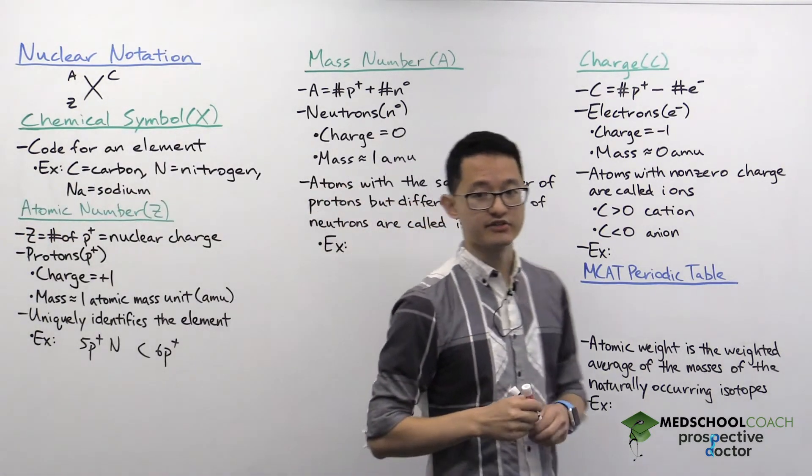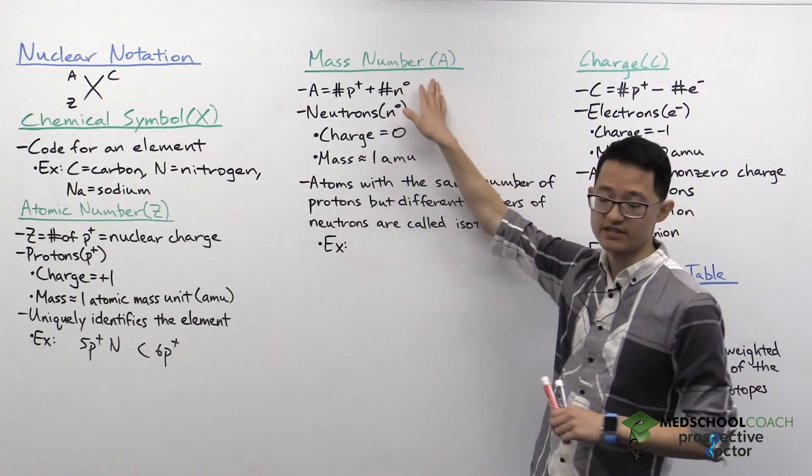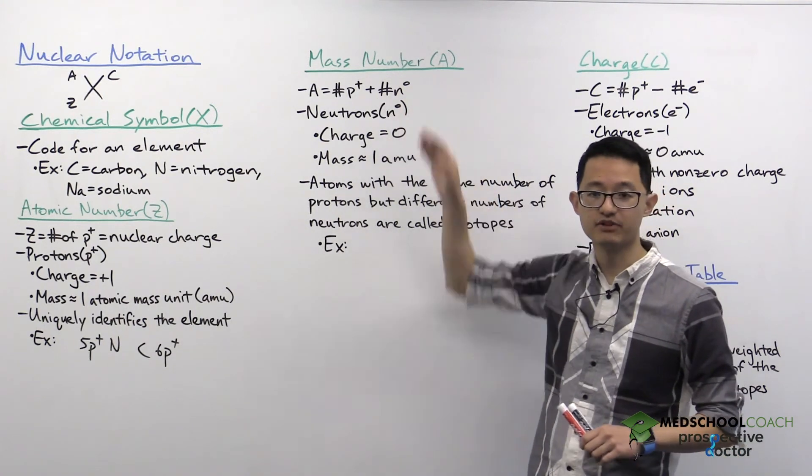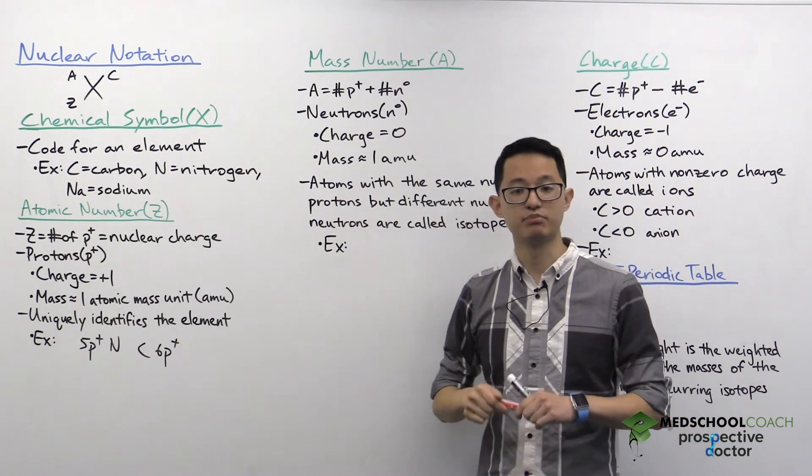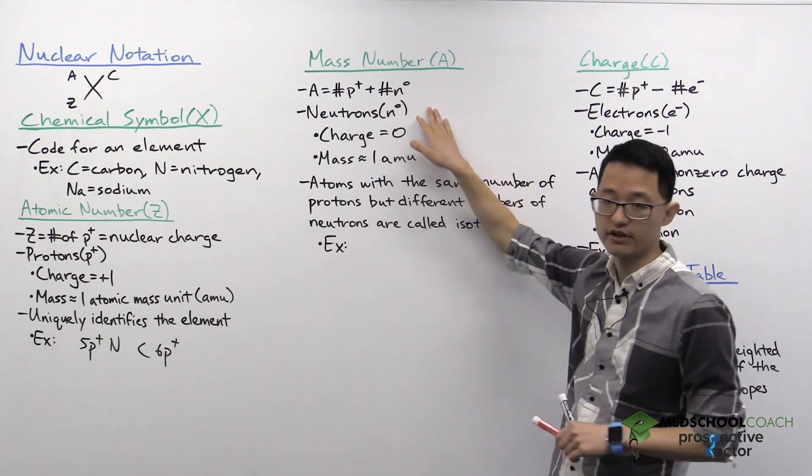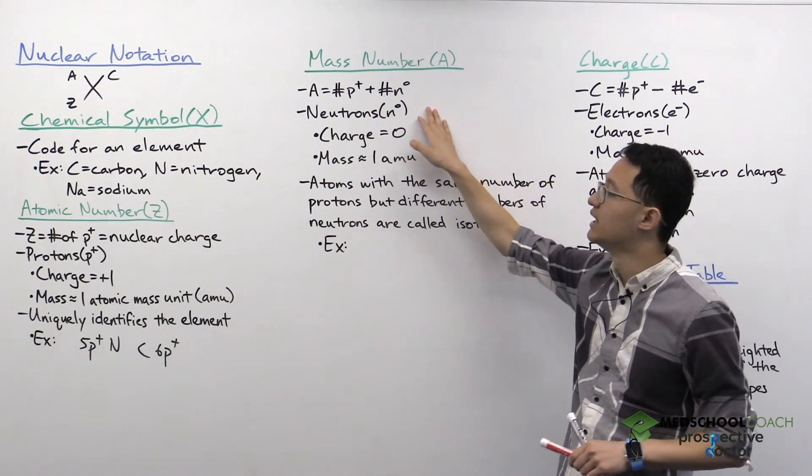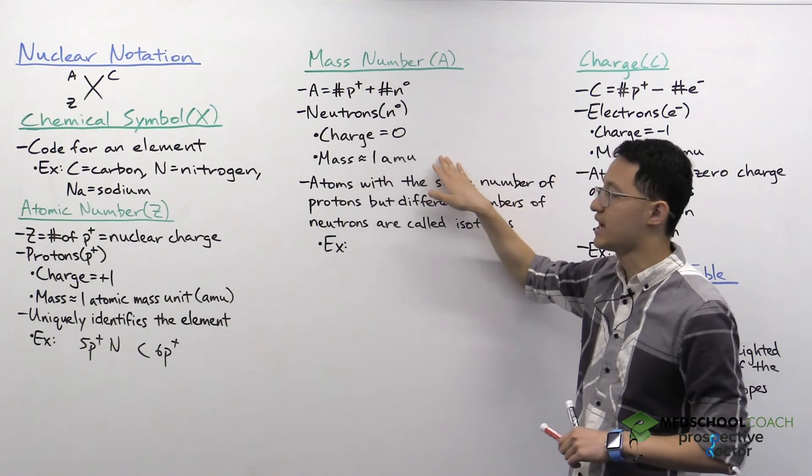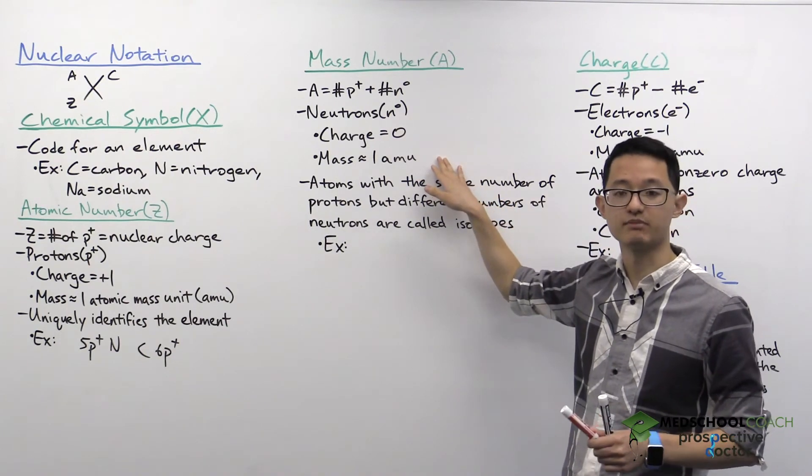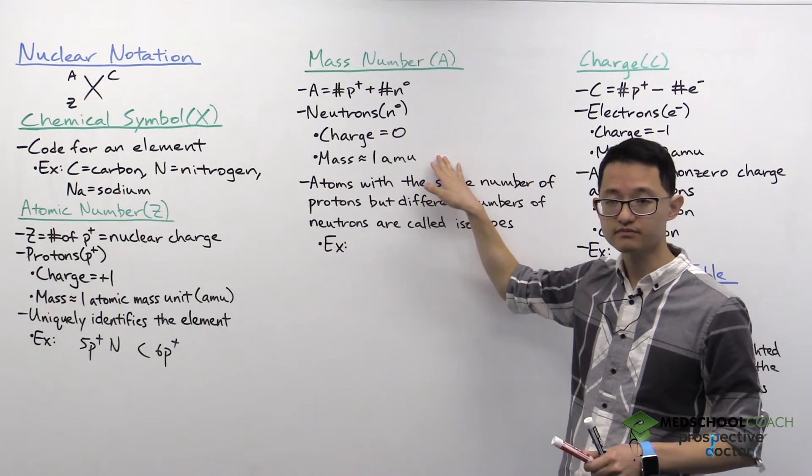So now let's take a look at the mass number, A. The mass number is equal to the number of protons plus the number of neutrons. Neutrons we mentioned earlier are located in the nucleus. They have a charge of zero and a mass similar to protons, so approximately one amu.